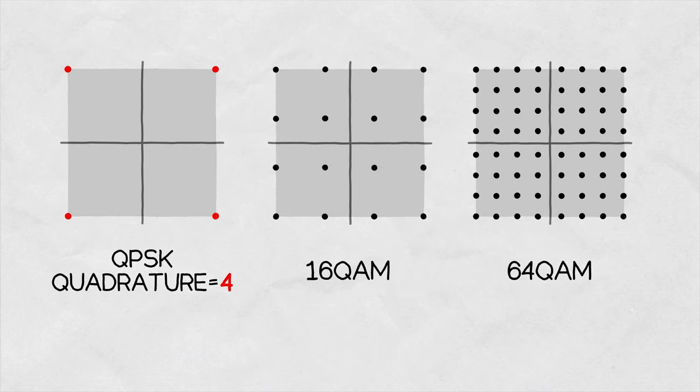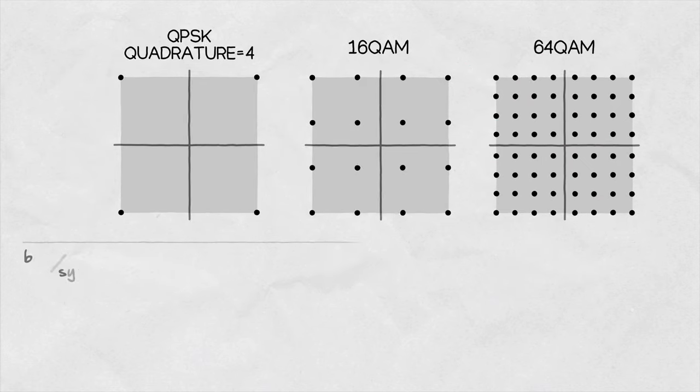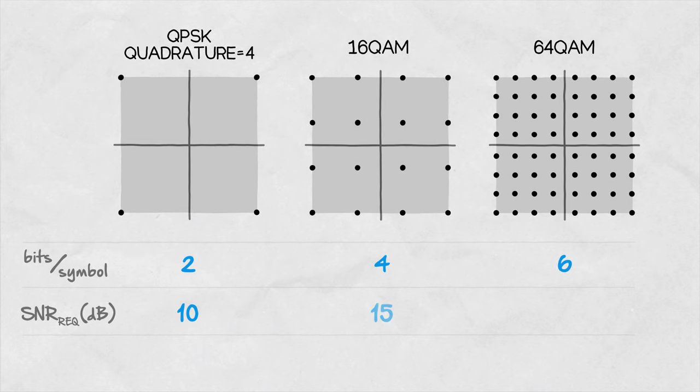The modulation technique determines the type of modulation used to encode the data. With QAM modulation, the number tells us the amount of states the carrier signal can have. The higher the modulation number, the more information we're able to pack into the same bandwidth at the expense of higher required SNRs.